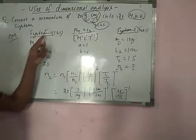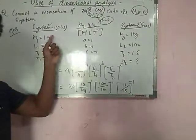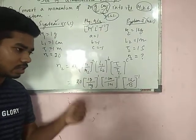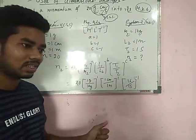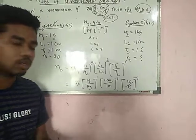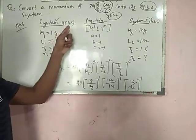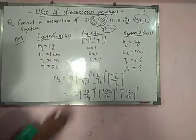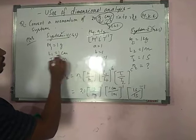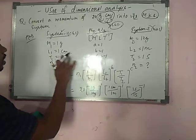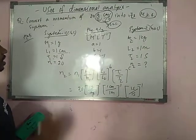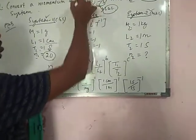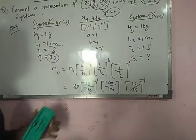For CGS system, which is system 1: MKS stands for meter-kilogram-second, and CGS is centimeter-gram-second. System 1 is given in CGS, so M₁ equals 1 gram, L₁ equals 1 centimeter, T₁ equals 1 second, and N₁ equals 20.